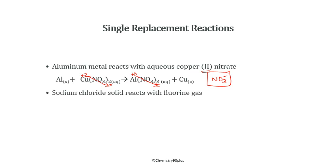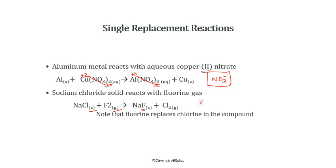Another example: sodium chloride solid reacts with fluorine gas. Fluorine is more reactive than chlorine, so it replaces the chloride ion from NaCl, giving NaF and Cl₂ gas. Remember the seven diatomic molecules: hydrogen, nitrogen, oxygen, fluorine, chlorine, bromine, and iodine. When written alone in an equation, they must always be written in diatomic form. When they form a compound, they are no longer diatomic — you just write the compound formula.